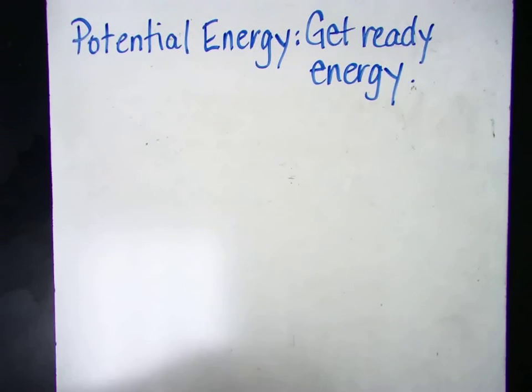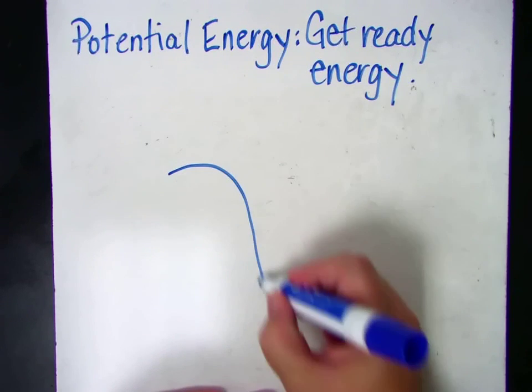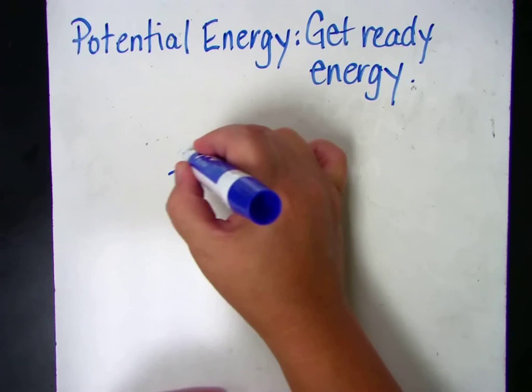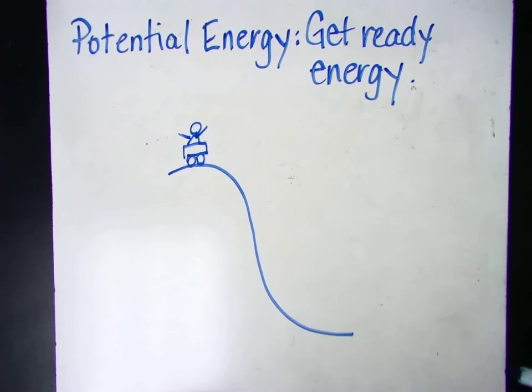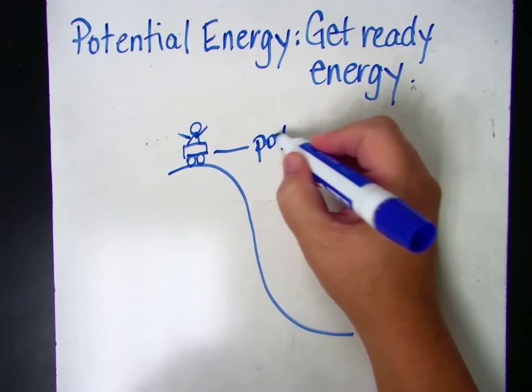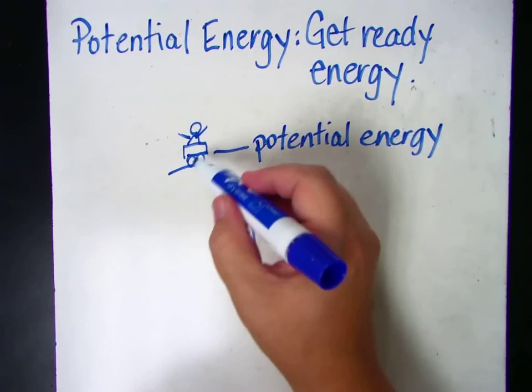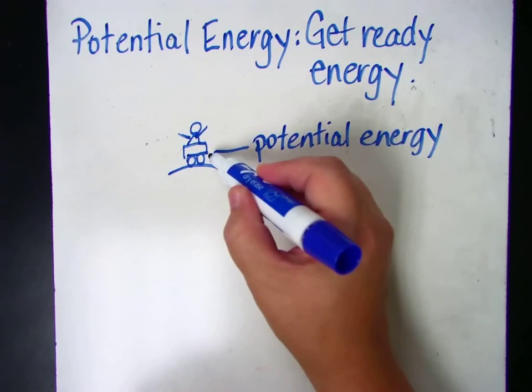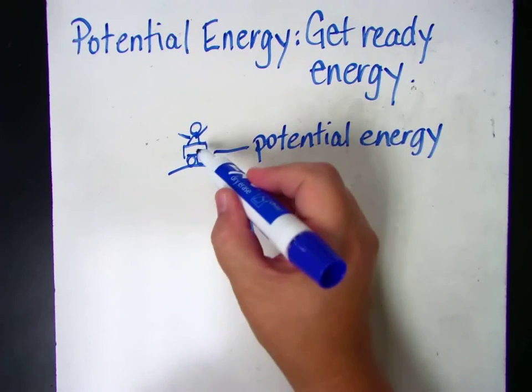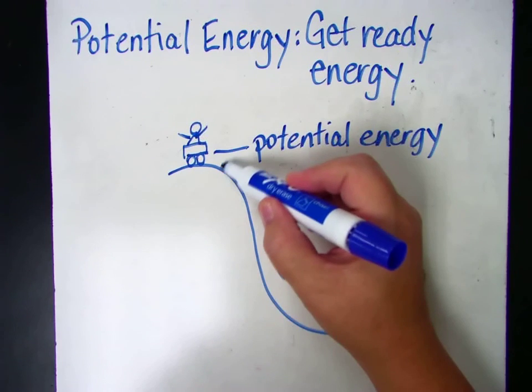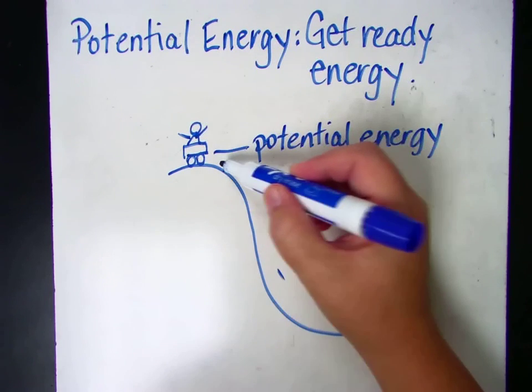An example of potential energy we used in class was a roller coaster. When the car is sitting up on top of the roller coaster, it's got potential energy. The reason it has potential energy is because it's getting ready to move down the slope. It's almost like it's all wound up, and as soon as it gets to just that one point, the potential energy will be transferred.